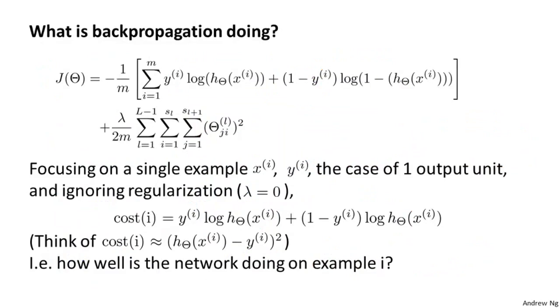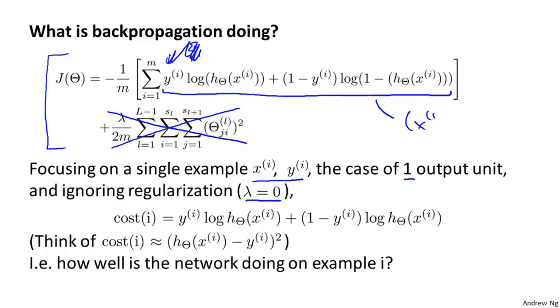To better understand what backpropagation is doing, let's look at the cost function. Here's the cost function that we had for when we have only one output unit. If we have more than one output unit, we used to have a summation over the output units indexed by k there. But if only one output unit, then this is a cost function. And we do forward propagation and backpropagation on one example at a time. So let's just focus on a single example, xi, yi. And focus on the case of having one output unit. So yi here is just a real number. And let's ignore regularization. So lambda equals zero. And this final term, that regularization term goes away. Now, if you look inside this summation, you find that the cost term associated with the i-th training example, that is the cost associated with training example xi, yi, that's going to be given by this expression.